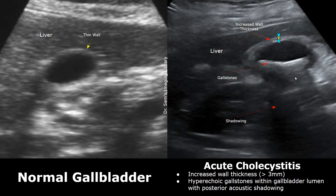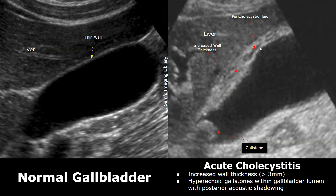The gallbladder wall is also thickened. In this image, a gallstone is present in the gallbladder's neck region, casting a posterior acoustic shadow. The gallbladder wall is thickened and there are hypoechoic areas within and outside the gallbladder wall. These features indicate gallbladder inflammation.